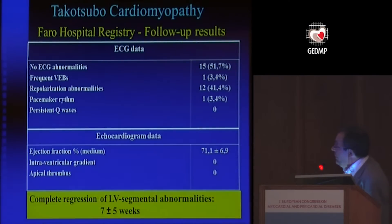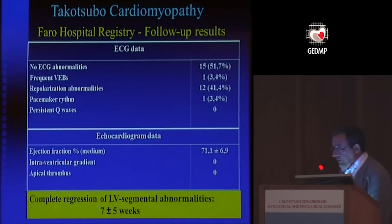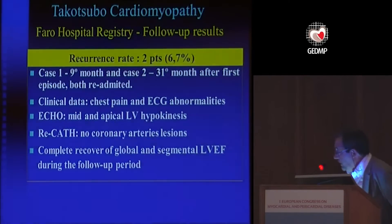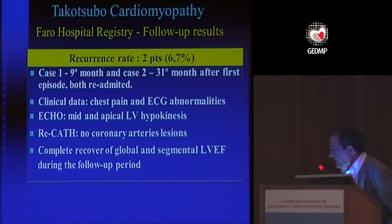Complete recovery of LV segmental abnormalities occurred in approximately seven weeks — meaning between two weeks and three months, all patients normalized. The recurrence rate was about 7%, with two cases in which the clinical presentation, ECG, coronary artery results, and recovery were exactly the same as the index event.